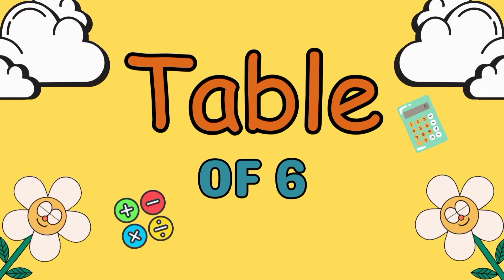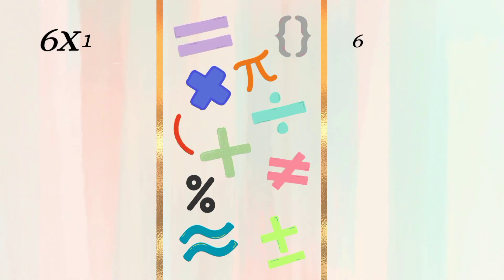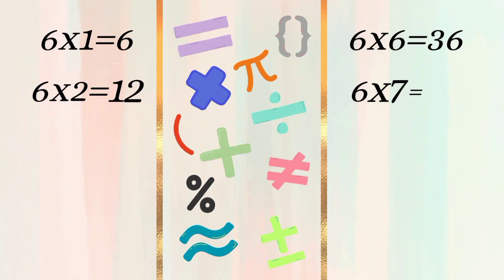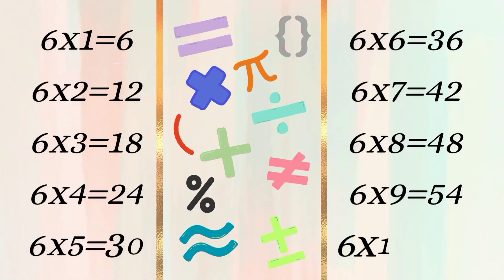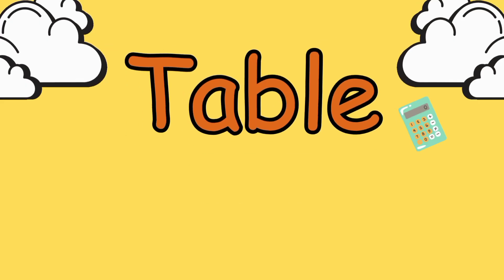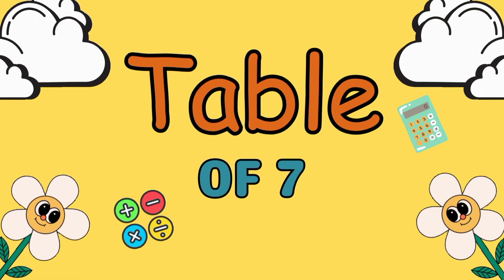Table of 6: 6 1s are 6, 6 2s are 12, 6 3s are 18, 6 4s are 24, 6 5s are 30, 6 6s are 36, 6 7s are 42, 6 8s are 48, 6 9s are 54, 6 10s are 60.